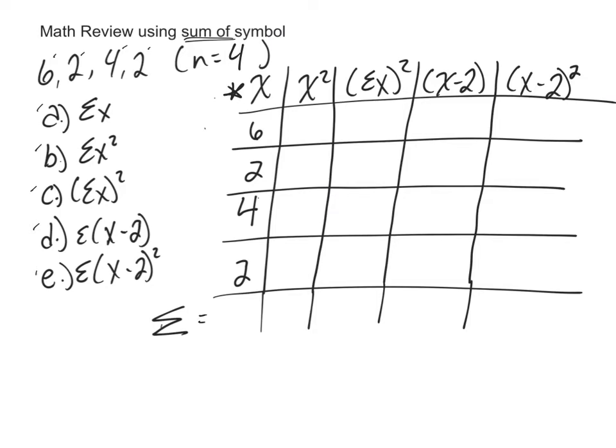The first one is sum of x. Sum of x is just adding up 6 and 2 and 4 and 2, so my sum of x is 14. And I have a little running tally over here where I'm going to put all my answers.